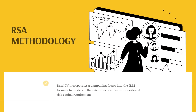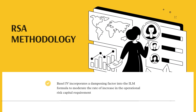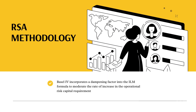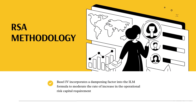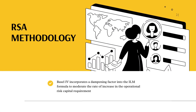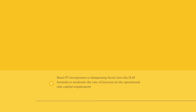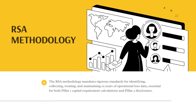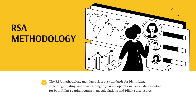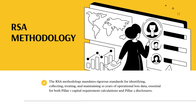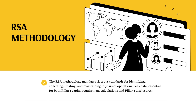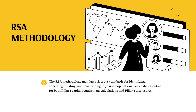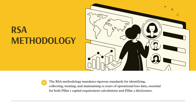Basel IV incorporates a dampening factor into the ILM formula to moderate the rate of increase in the operational risk capital requirement. The RSA methodology mandates rigorous standards for identifying, collecting, treating, and maintaining 10 years of operational loss data, essential for both Pillar 1 Capital Requirement calculations and Pillar 3 Disclosures.